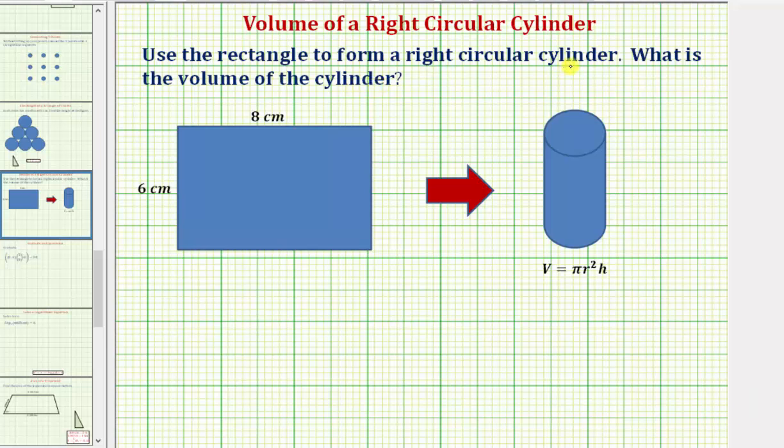In this question, we're asked to form a right circular cylinder using this rectangle here, which measures six centimeters by eight centimeters. Then we're asked to determine the volume of the right circular cylinder.